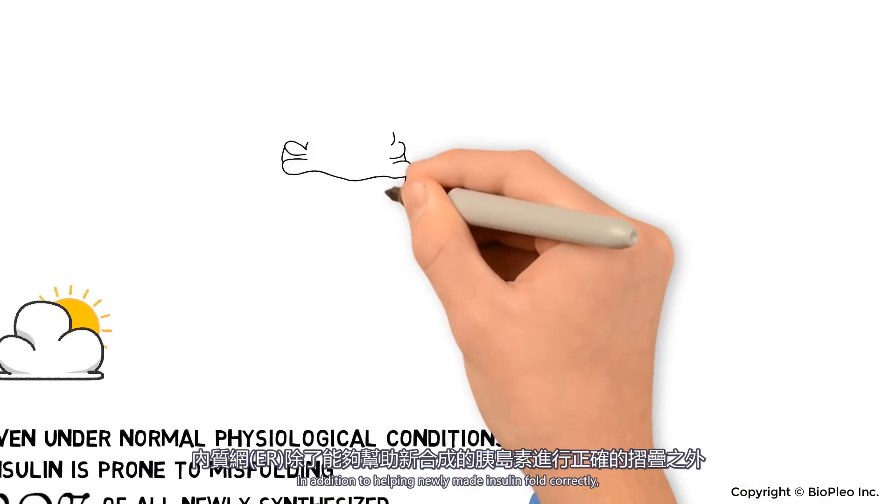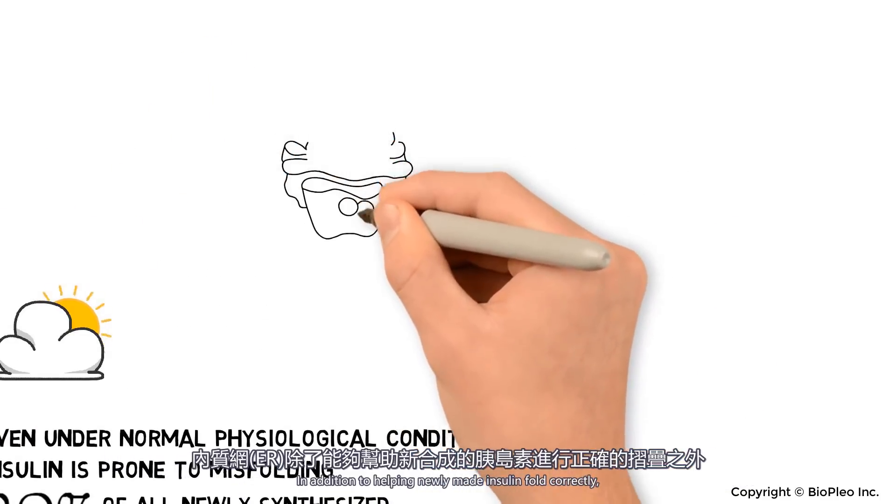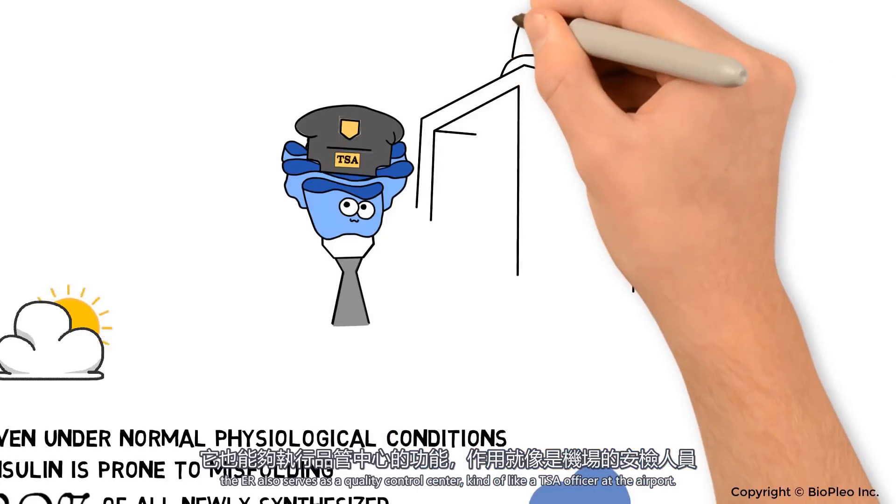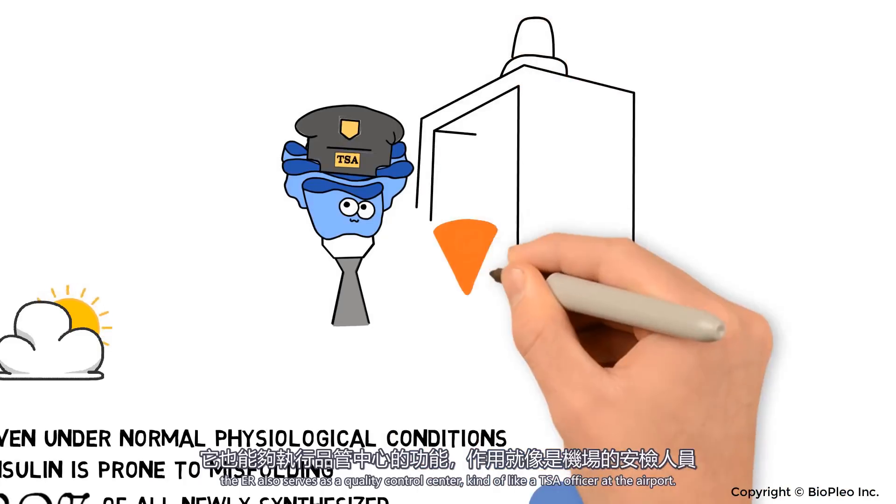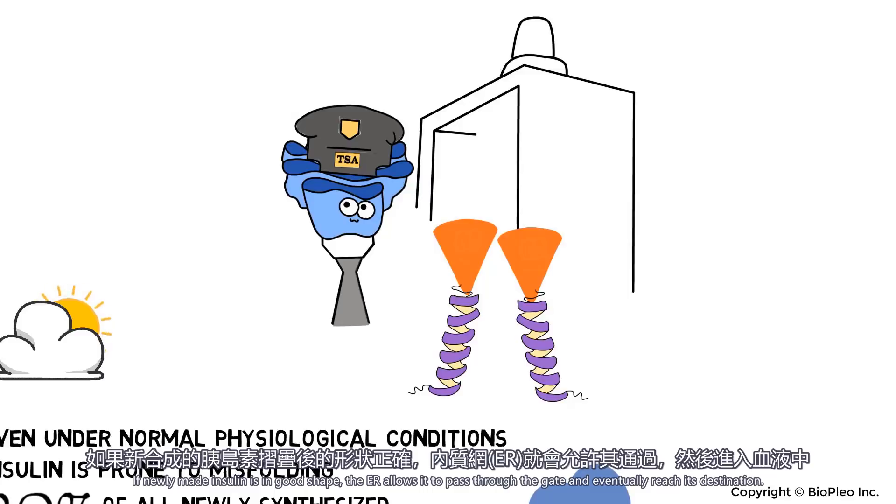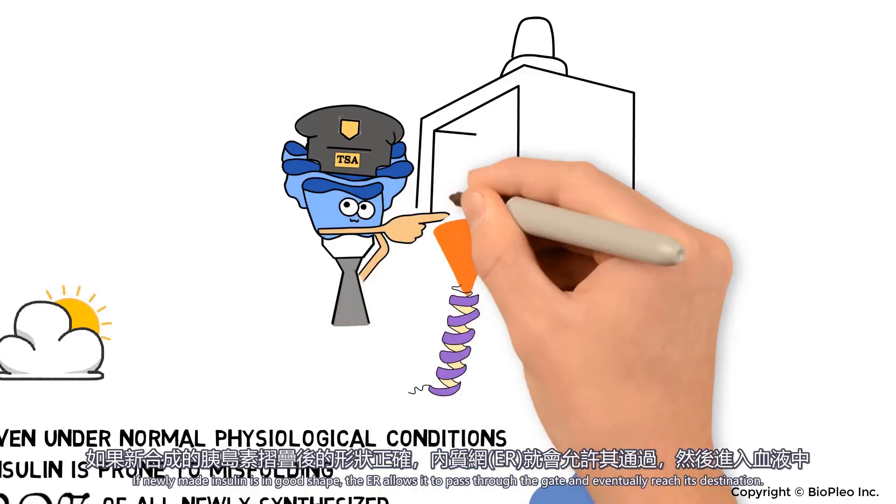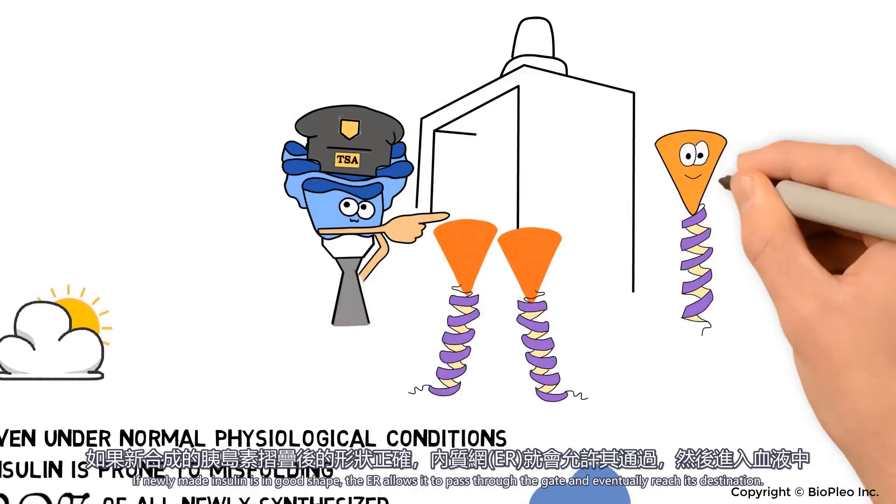In addition to helping newly made insulin fold correctly, the ER also serves as a quality control center, kind of like a TSA officer at the airport. If newly made insulin is in good shape, the ER allows it to pass through the gate and eventually reach its destination.